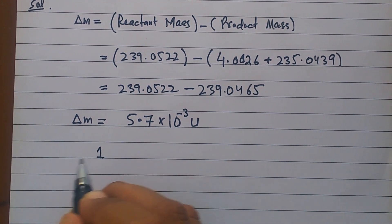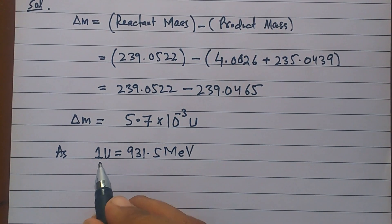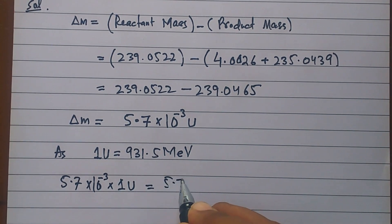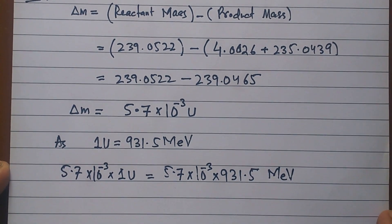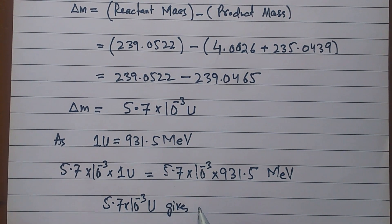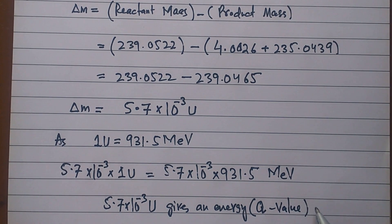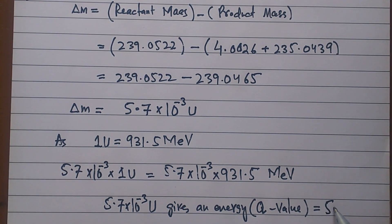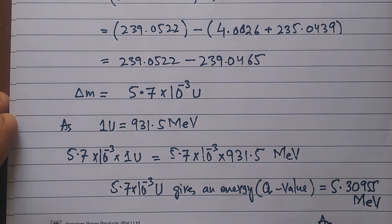Using the conversion factor, as 1 u is equal to 931.5 mega electron volt, I have 5.7 exponent minus 3 u. So I multiply 5.7 exponent minus 3 by 931.5. When you multiply this, the answer is 5.30955 mega electron volt. This is the answer. This is how this question is solved. Thank you.